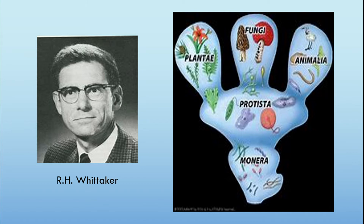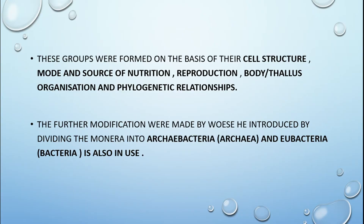These groups were formed on the basis of their cell structure, mode or source of nutrition, reproduction, body and thallus organization, and phylogenetic relationships. This is an important point to remember. The groups were formed based on cell structure, type of nutrition — heterotrophic or autotrophic — and type of reproduction.